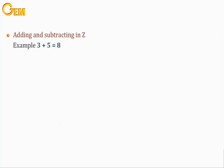Adding and Subtracting in Z. Examples: 3 plus 5 equals 8. 4 plus 15 equals 19. 8 plus 12 equals 20.